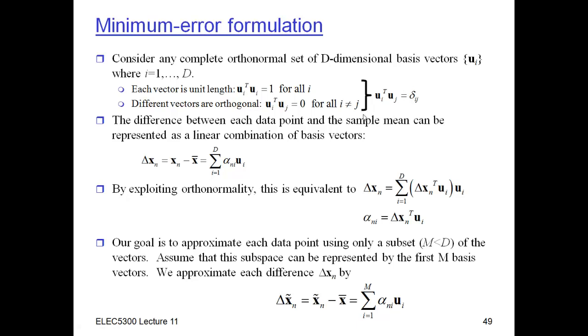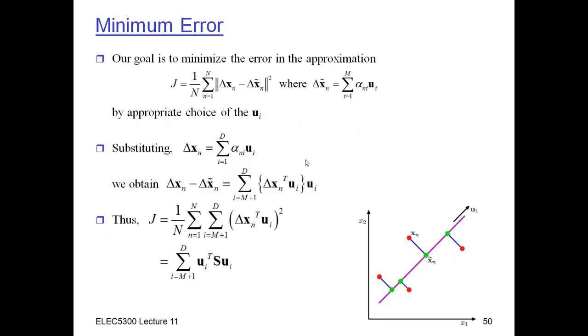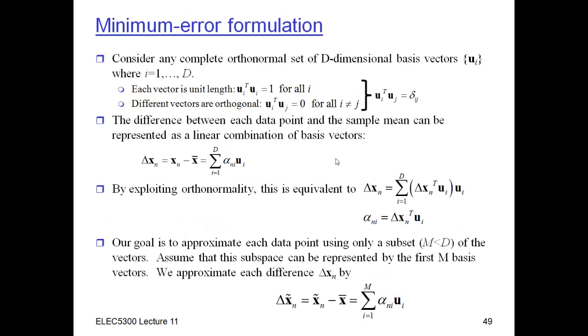Now, when we're looking at the error, it's most interesting to look at the difference between the data point and the sample mean, because we're really not interested in anything that's at the mean, but only interested in the differences between the data point and the mean, which is our expectation. And so if we have any kind of orthonormal set of basis vectors, we can express this difference exactly by the sum of a bunch of steps in each of the directions weighted by alpha. And so this is going to be exact because we have exactly the number of dimensions here, so we can get anywhere in the sample space.